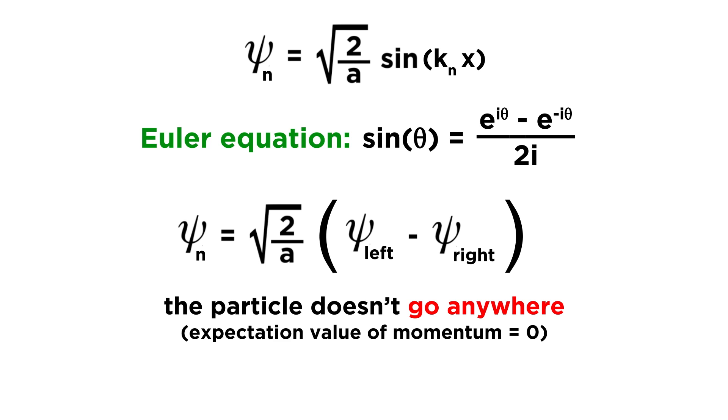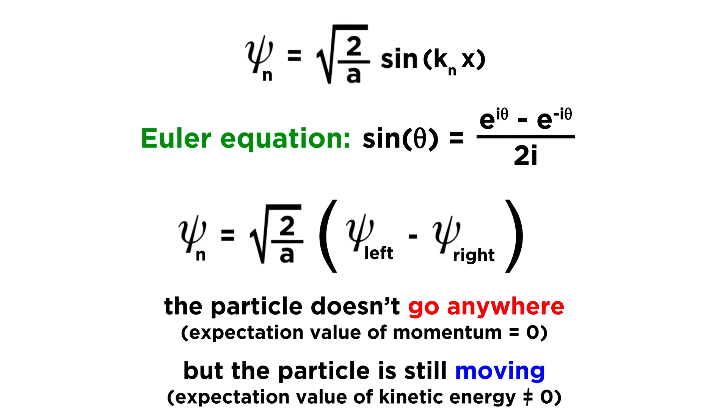This means that this particle is always traveling in both directions at the same time. So in this way, the particle doesn't really go anywhere, which is why its momentum is zero, but the particle is still technically moving, so its kinetic energy is not zero.